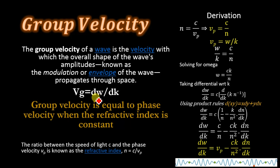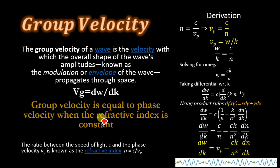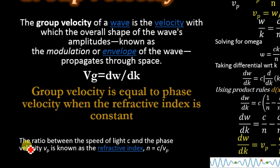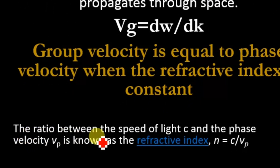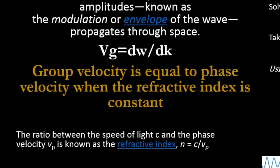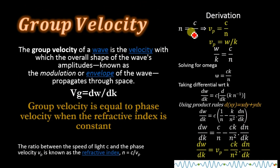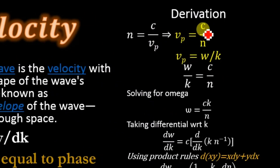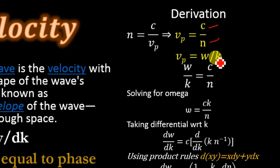Differentiating angular frequency with respect to wave number: the group velocity equals the phase velocity when the refractive index is constant. According to the definition of refractive index, n = c/vp, so vp = c/n, where c is the speed of light and n is the refractive index. Since phase velocity also equals ω/k, comparing the two equations gives ω/k = c/n.